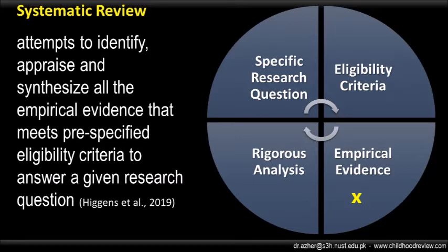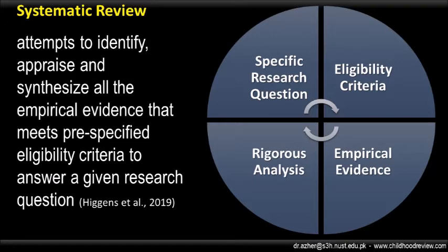Third, the literature should provide you empirical evidence that you will examine to answer your research question. In systematic review, literature based on empirical data is recommended. Number four, the process of analysis must be rigorous. It should inform the reader of your pathway to find answers to your research question while going through the selected literature. The literature you have selected may have varied methodological, theoretical, and contextual dimensions. Sometimes the selected studies are not comparable in terms of methods of investigation or the context where these studies are conducted. Hence, your process of analysis must address such complicated aspects of your systematic review.